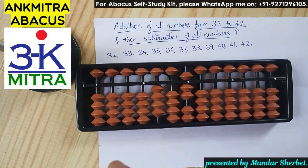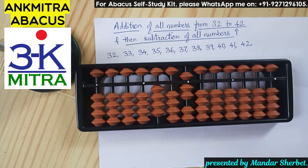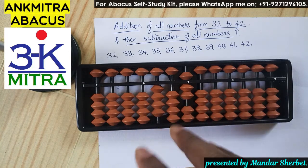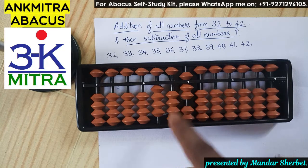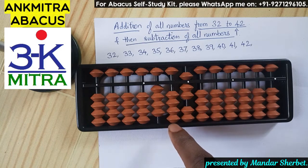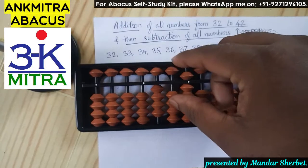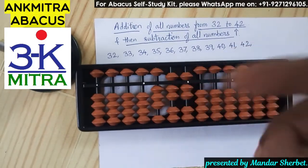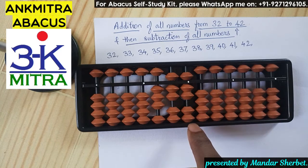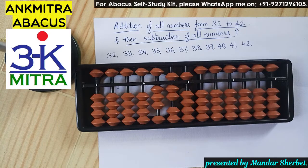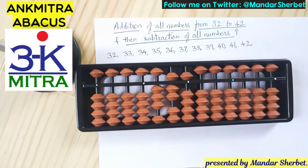Now we will start subtracting all these numbers one by one for good subtraction practice. Starting with minus 32: on the tens place I subtract 3 — no bead available, so I use the big friend formula of 3 — plus 7 minus 10. Then I subtract 2 on the units place directly. Subtraction of 32 is done.